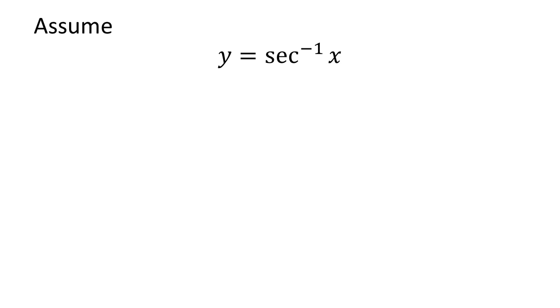To find out the value of tangent of arc secant of x, let's assume y is equal to arc secant of x. As arc secant is the inverse of secant, by application of the properties of inverse function, we get secant of y is equal to x.